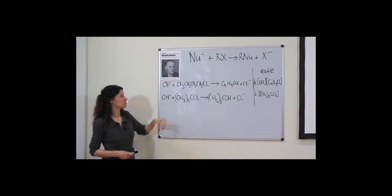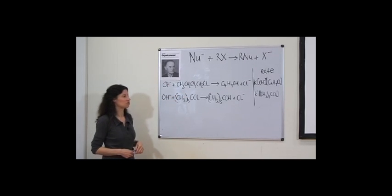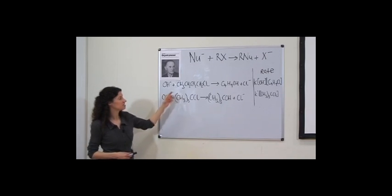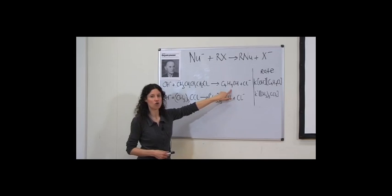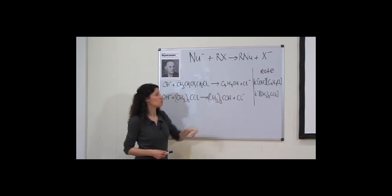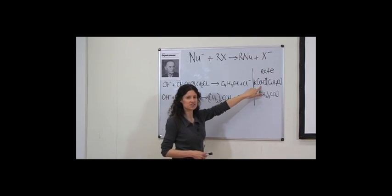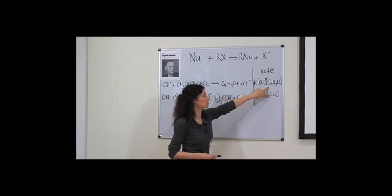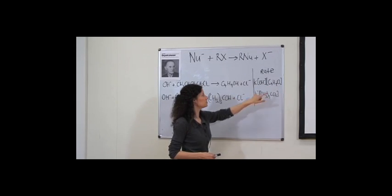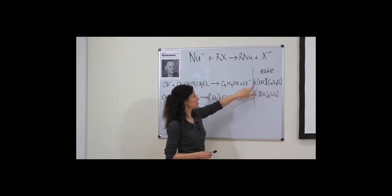We can add this species to a solution of hydroxide ions and the exchange will take place, giving rise to the alcohol product 1-butanol. The rate of this reaction depends on the concentration of the hydroxide ions as well as the concentration of the n-butyl chloride, and we also have the rate constant k.